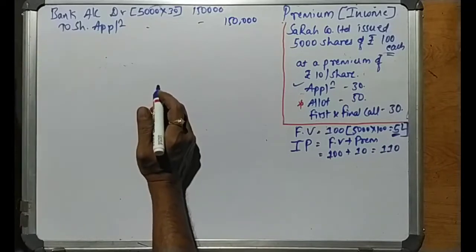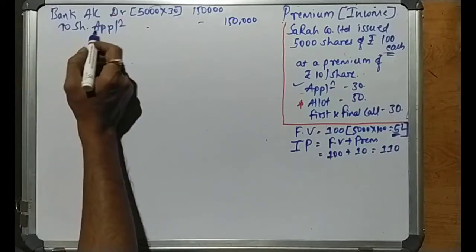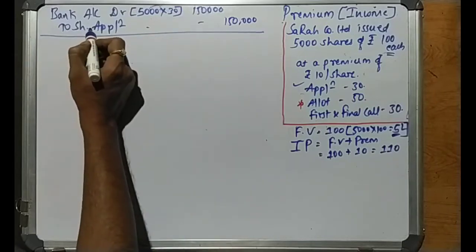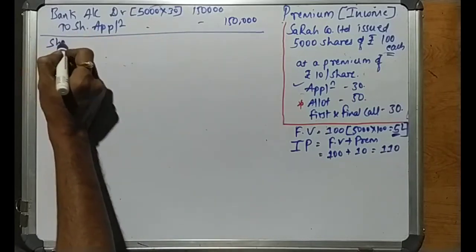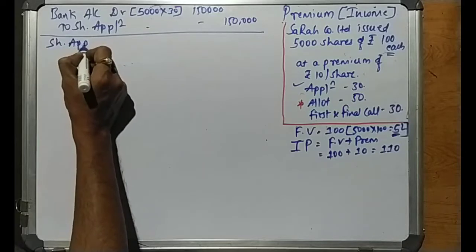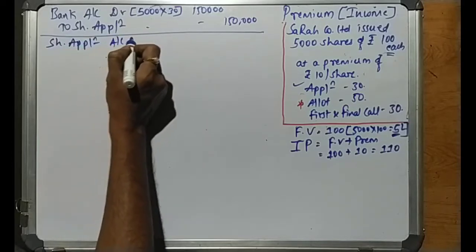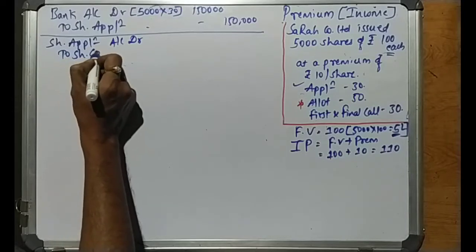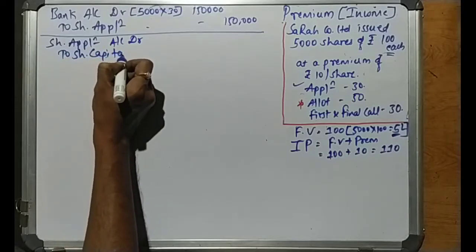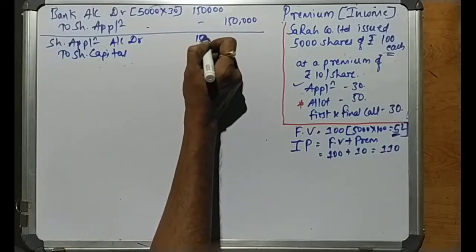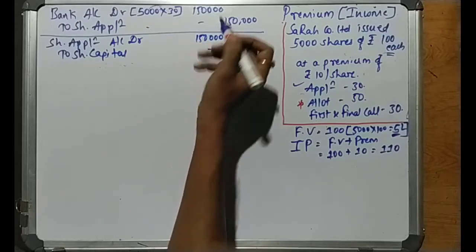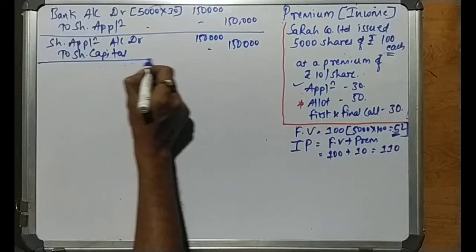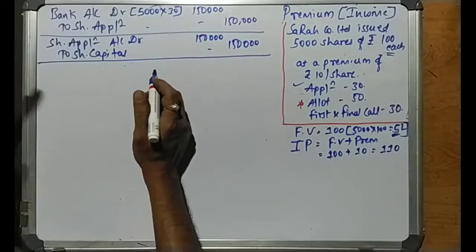Now we will transfer this amount to the capital account by reversing the journal entry. The entry is: Share Application Account debit to Share Capital Account. The same amount of rupees 1,50,000 will be transferred — Share Application Dr 1,50,000; to Share Capital 1,50,000. We are now done with the application stage.